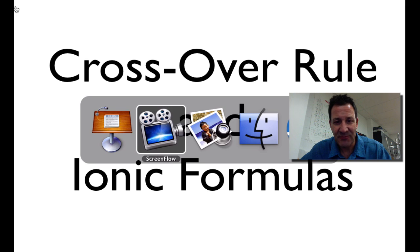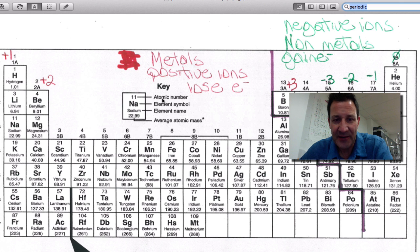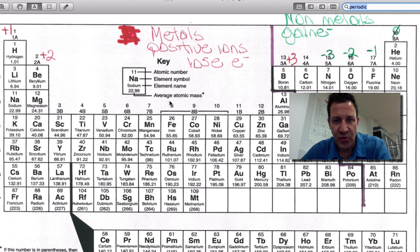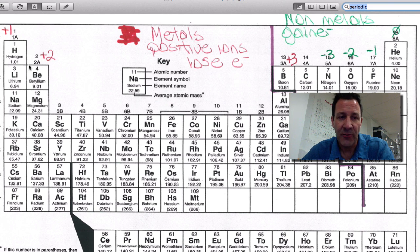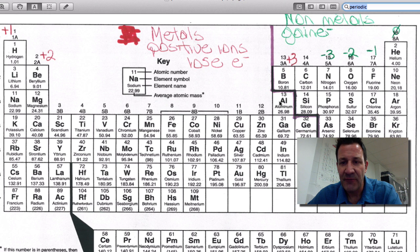Before we do that, let's make sure that everybody has their handy dandy periodic table out. You need to be able to know that group 1 forms plus 1, group 2 forms plus 2, group 3 for the metals forms plus 3 charges, and then we have minus 1, minus 2, and minus 3 for groups 15, 16, and 17.